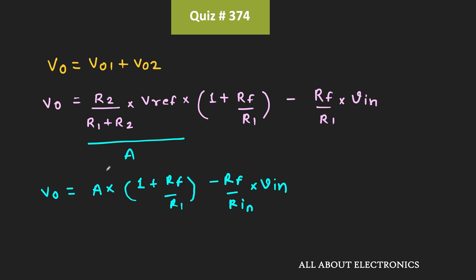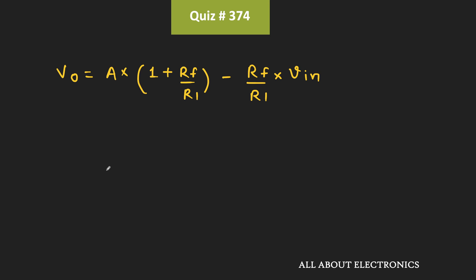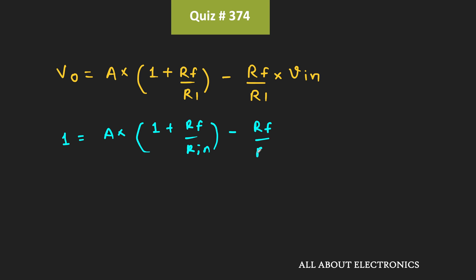The first condition states that when Vin equals 0.1 volt, Vout equals 1 volt. So we can write: 1 equals a times (1 plus Rf divided by Rin) minus (Rf divided by Rin) times 0.1. Similarly, the second condition states that when Vin equals 1 volt, Vout equals 6 volts, giving us a second equation.